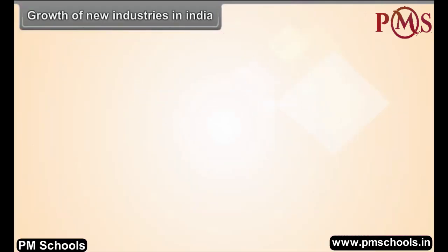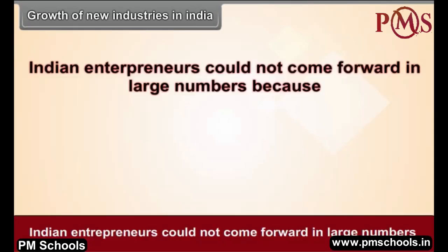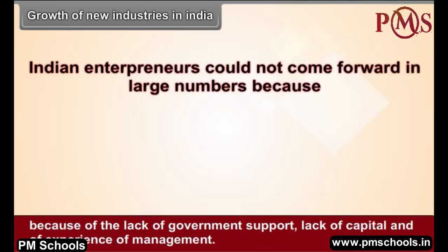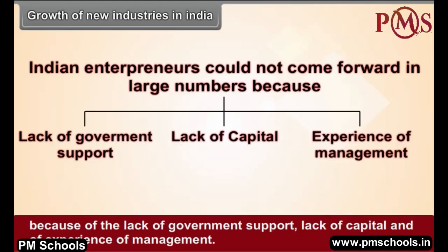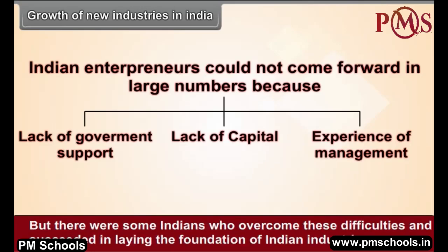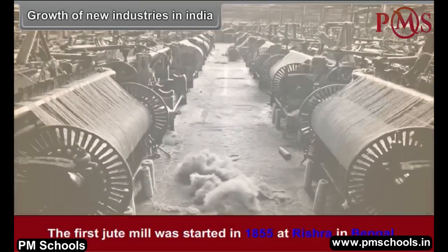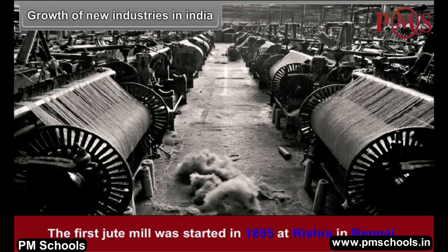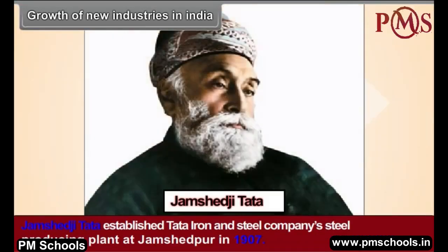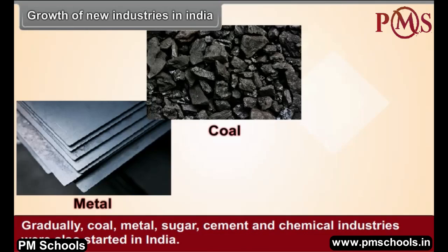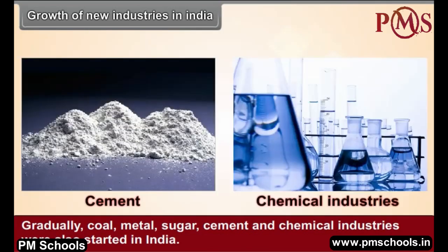Indian entrepreneurs could not come forward in large numbers due to lack of government support, capital, and management experience. However, some Indians overcame these difficulties. Kawasji Nanabhoy started the first cotton textile mill in Mumbai in 1853. The first jute mill was started in 1855 at Rishra in Bengal. Jamshedji Tata established the Tata Iron and Steel Company's steel-producing plant at Jamshedpur in 1907. Gradually, coal, metal, sugar, cement and chemical industries were also started in India.